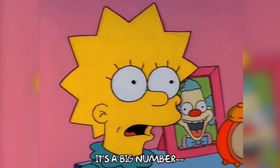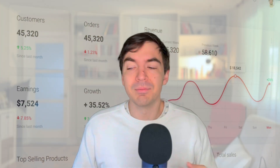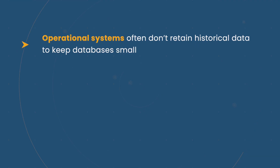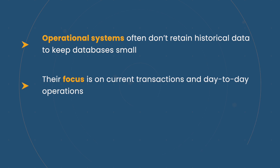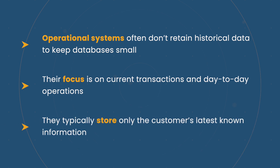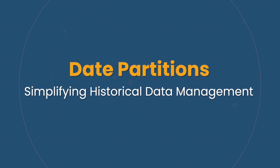I can't tell you the number of times I've had customers have this exact issue — they can't track historical information because generally most operational systems, most transactional application systems, keep only the data that they need because it keeps the database smaller. They're really just focused on operations — they don't need to know where someone used to live, they only need to know where they live now. This is why you'll see us do things like slowly changing dimensions, or the other common approach is date partitions.